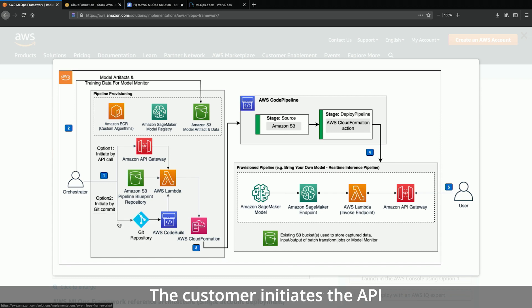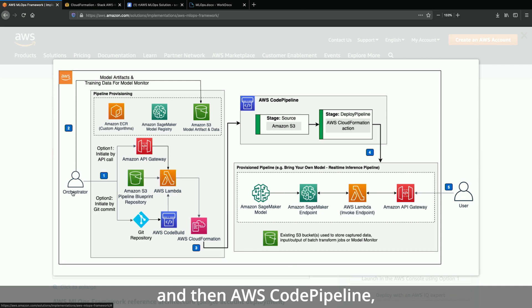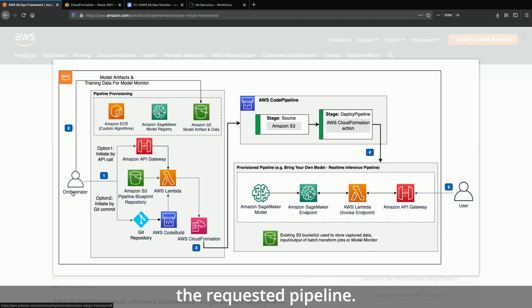The customer initiates the API call to Amazon API Gateway. The orchestrator's Lambda then creates an AWS CodePipeline, which then provisions the requested pipeline.